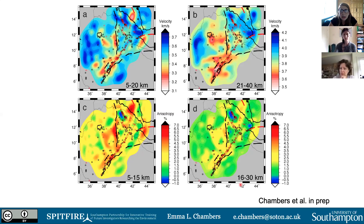A question from Leanne: how well do you know dike alignment and how is it related to extensional stress directions? The response: from the radial anisotropy I can only tell whether something is horizontally or vertically aligned — I can't comment on whether it's tilted. We're hopefully doing azimuthal anisotropy which will give an idea of orientation of dikes and alignment.